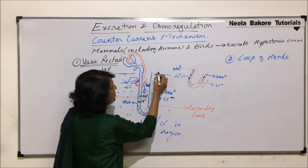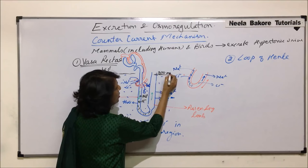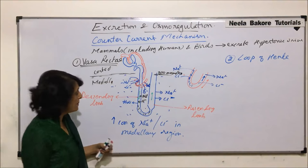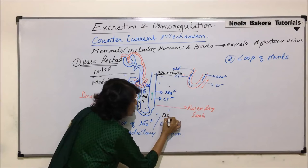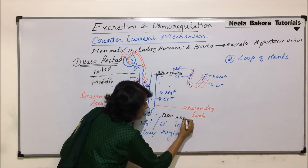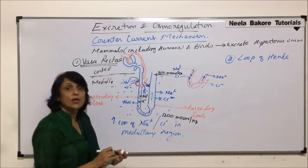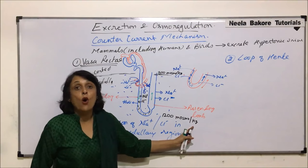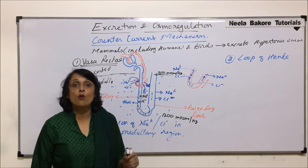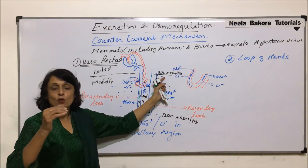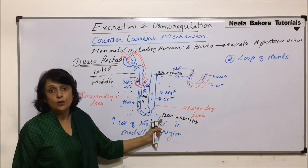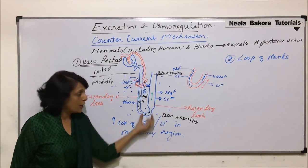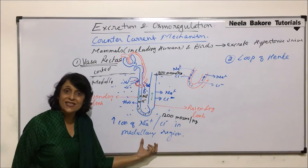At the upper part the concentration is 300 milliosmoles per kg, and in the deeper part of the medulla at the bottom it is 1200 milliosmoles per kg. This unit tells us the concentration of solute in 1 kilogram of solvent, which is known as osmolality. There is a lower concentration at the top and more concentration at the bottom — a gradient — and that is why a longer loop of Henle goes into the region where concentration is higher.